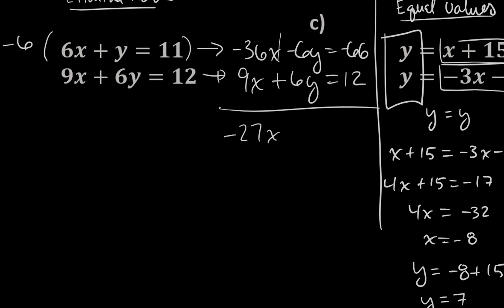My y's, negative 6y and positive 6y, that's a 0. So that eliminated just like we intended it to. And then finally, negative 66 plus 12 is the number negative 54.